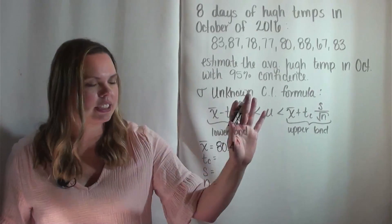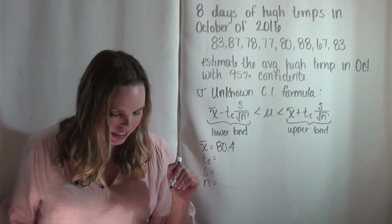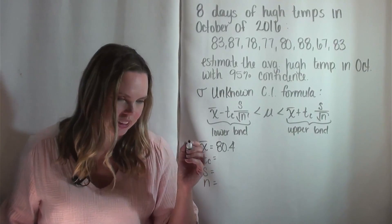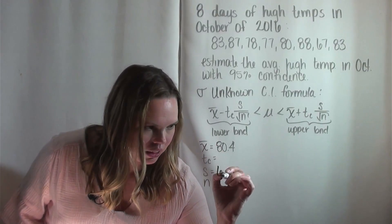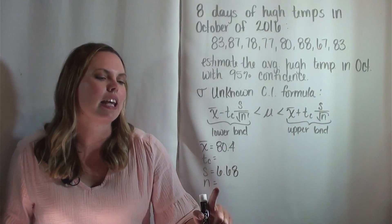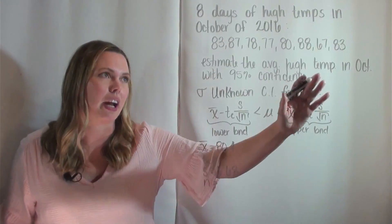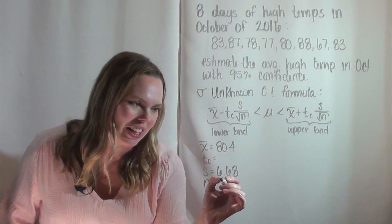I found that the mean of this data is 80.4, so that's the average of this sample. The standard deviation of this data is 6.68. And then N is the sample size, how many data points we collected. There are eight here, so our N is eight.